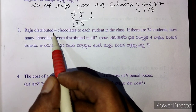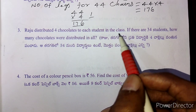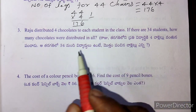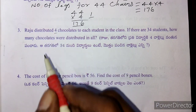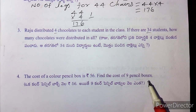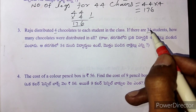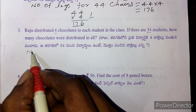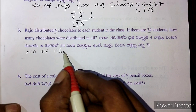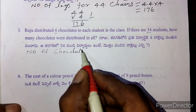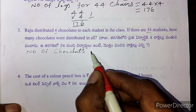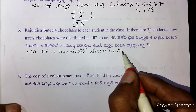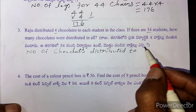Raju distributed four chocolates to each student in the class. If there are thirty-four students, how many chocolates were distributed in the class? Number of chocolates distributed to thirty-four students.